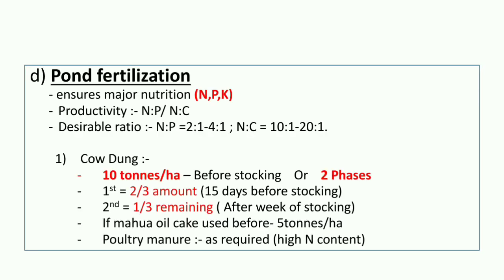After soil correction, fertilization is provided to the pond to ensure major nutrients: nitrogen, phosphorus, and calcium. Pond productivity depends on the N:P ratio (desirable 2:1 to 4:1) and N:C ratio (desirable 10:1 to 20:1). Cow dung is applied at 10 tons per hectare before stocking in two phases: first phase — two-thirds of the amount is applied 15 days before stocking; second phase — remaining one-third is applied after stocking.